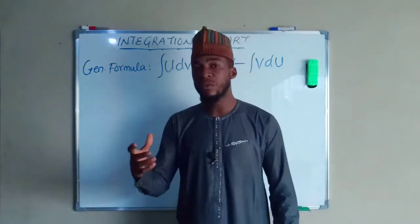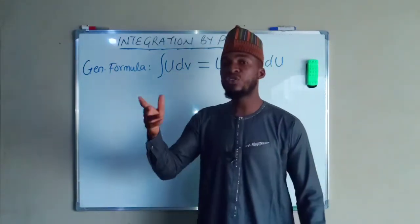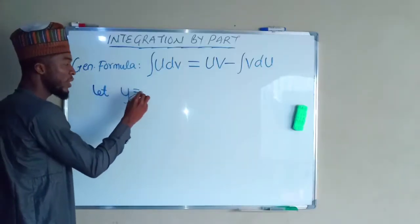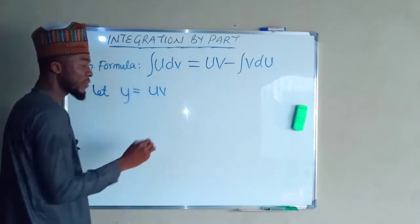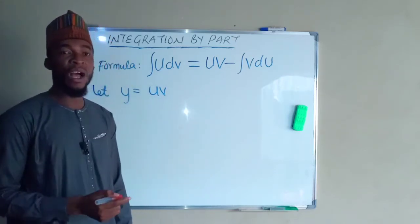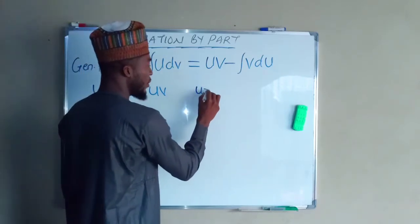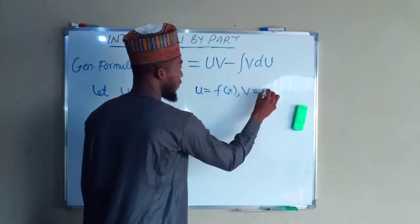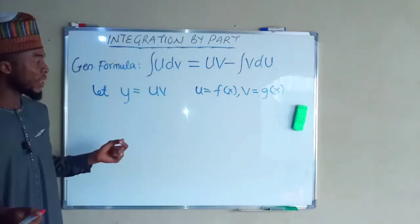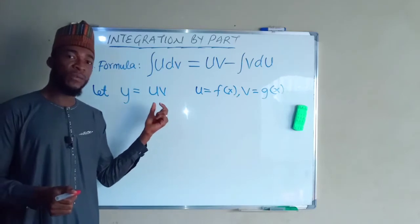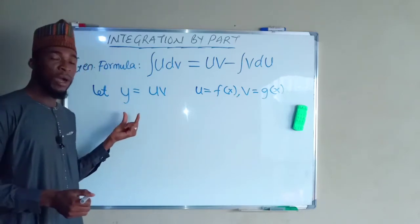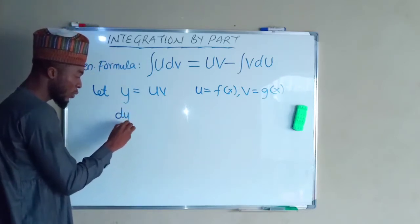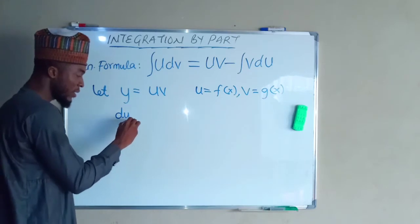As well as which function to decide as u and which to decide as dv. Let y equal uv, where u and v are functions of x — u is a function of x and v is another function of x. Since u and v are both functions of x, to differentiate y you have to apply the product rule. So the derivative of y with respect to x, dy/dx, is now going to be: